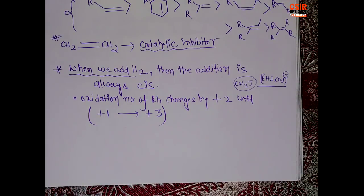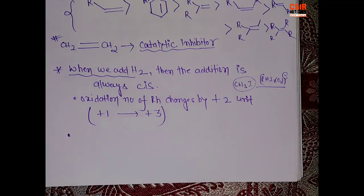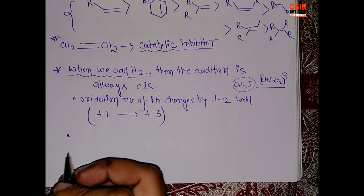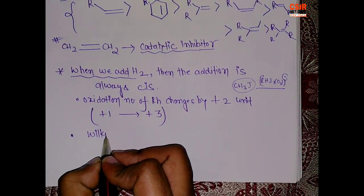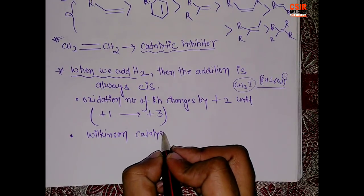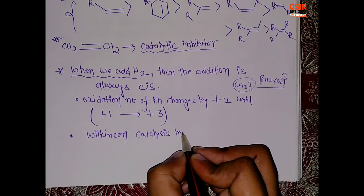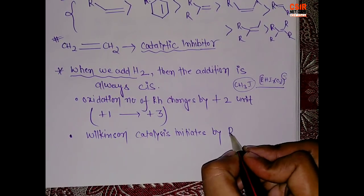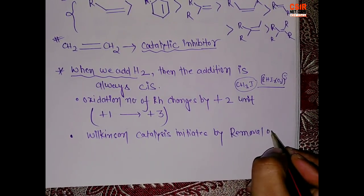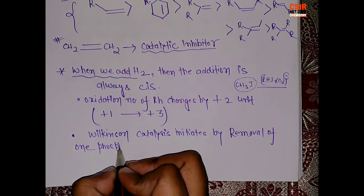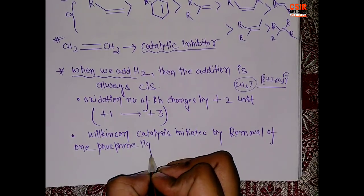And the next point is, generally the catalytic loop, this whole process, starts with the dissociation of phosphine ligand. I am writing: Wilkinson catalysis initiates by removal of one phosphine ligand.